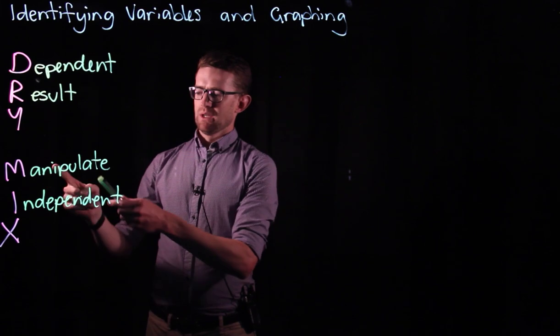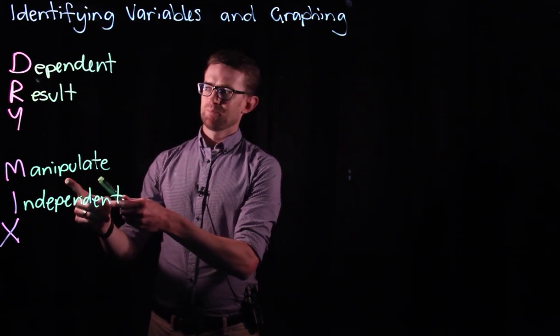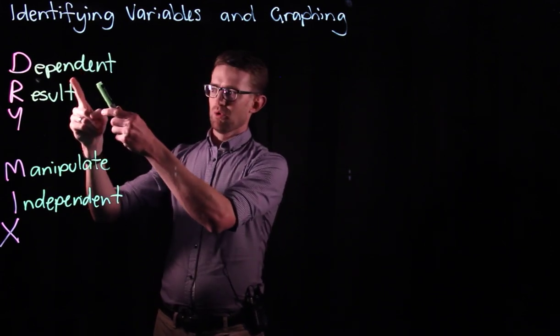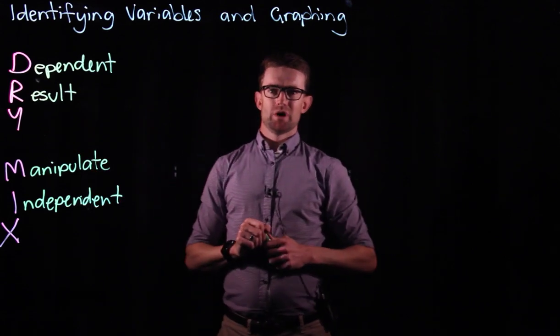So the independent variable is the one that we manipulate and the dependent variable is the one that is the final result.